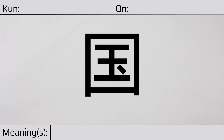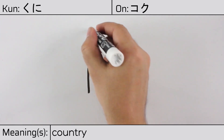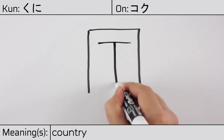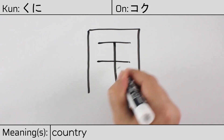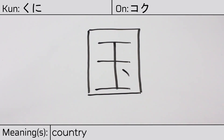Welcome to this lesson on Japanese kanji. Today, we'll be discussing this character. This kanji has a kunyomi or Japanese reading of kuni, and it has an onyomi or Chinese reading of koku. This character has the meaning country. Here is the stroke order.